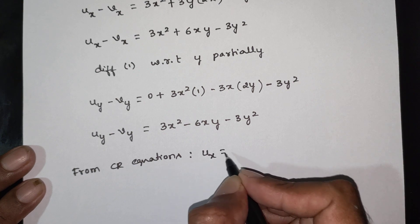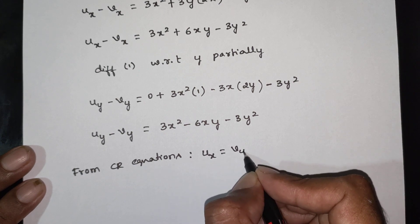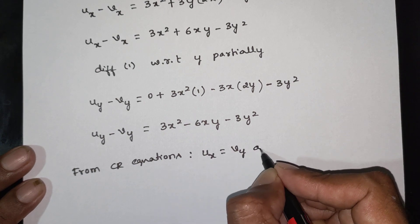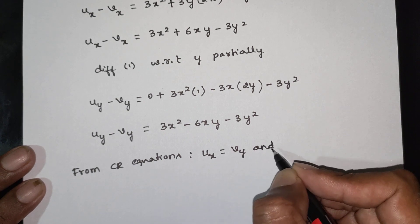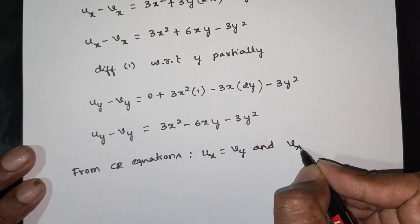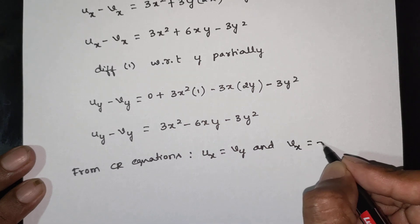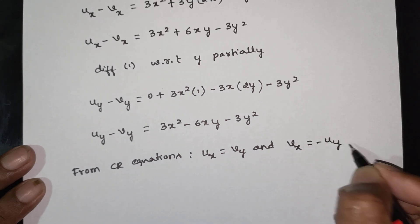From the Cauchy-Riemann equations: ux is equal to vy, and vx is equal to minus uy.